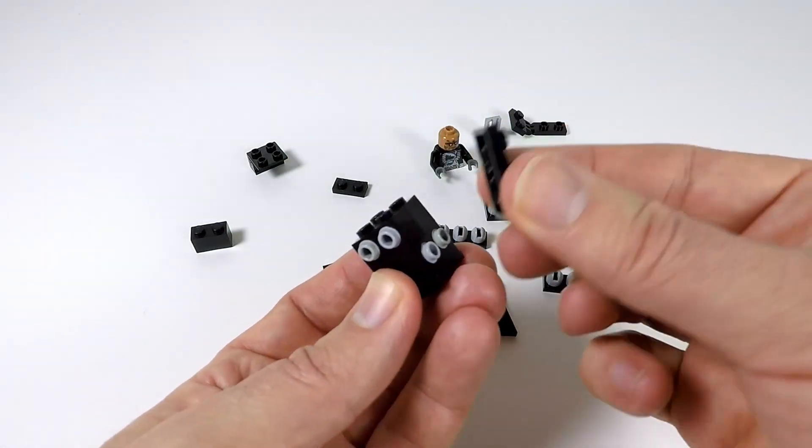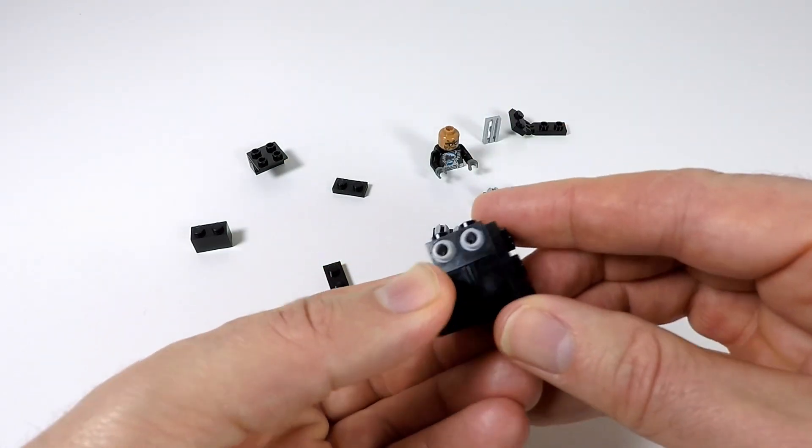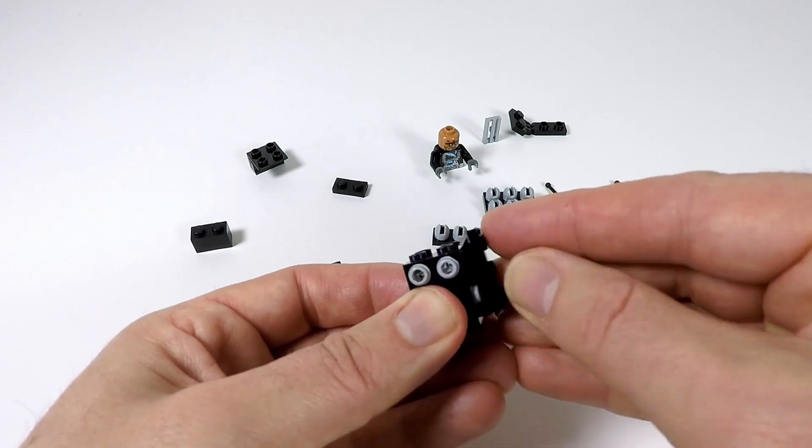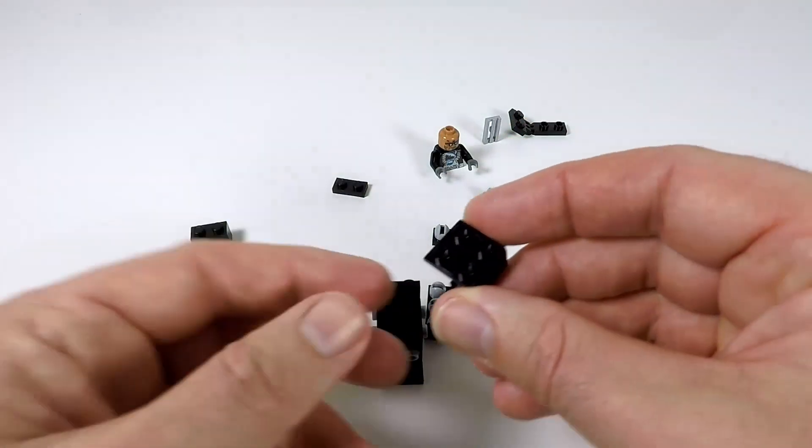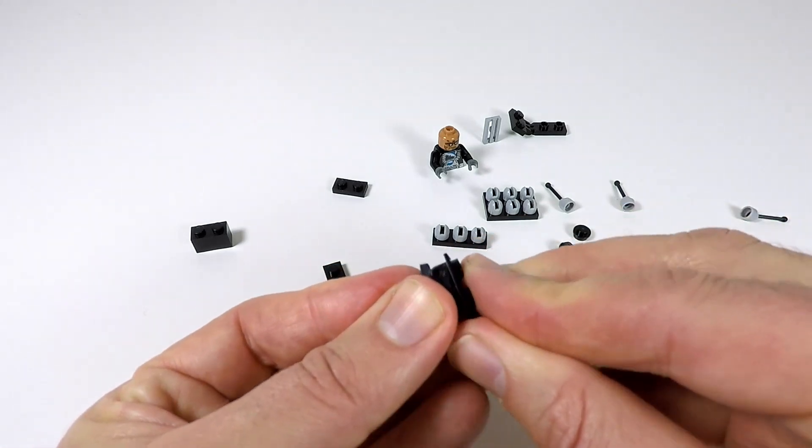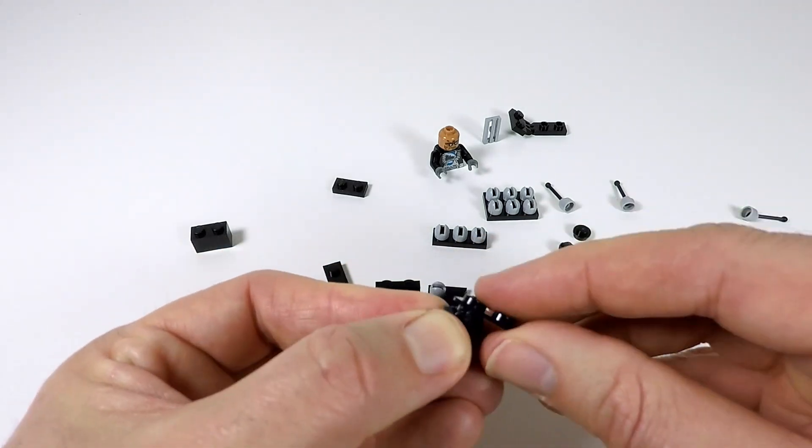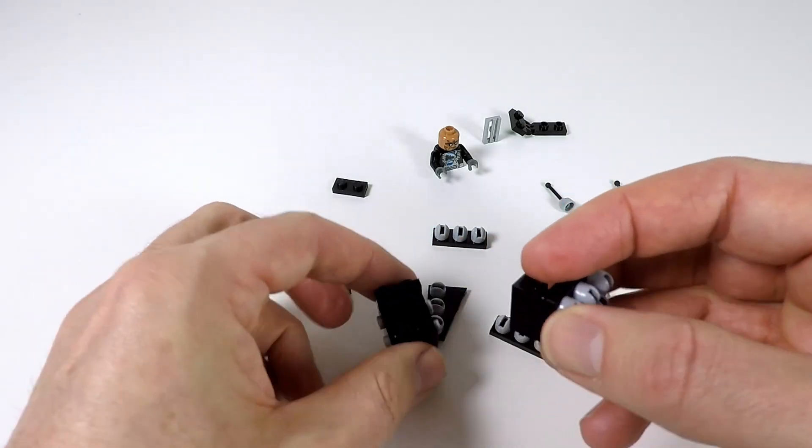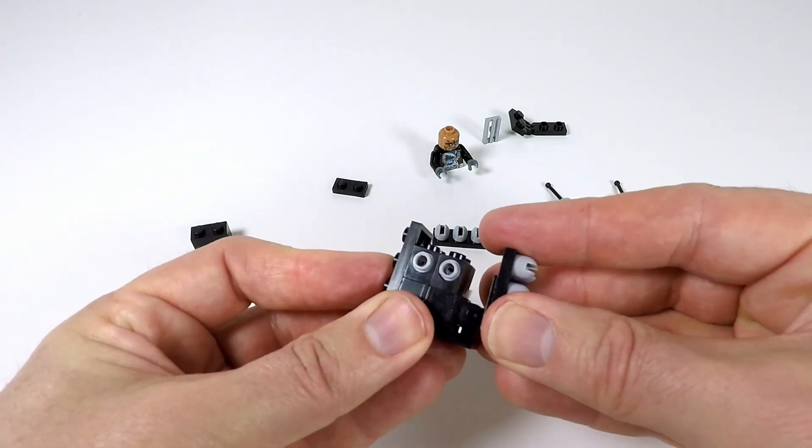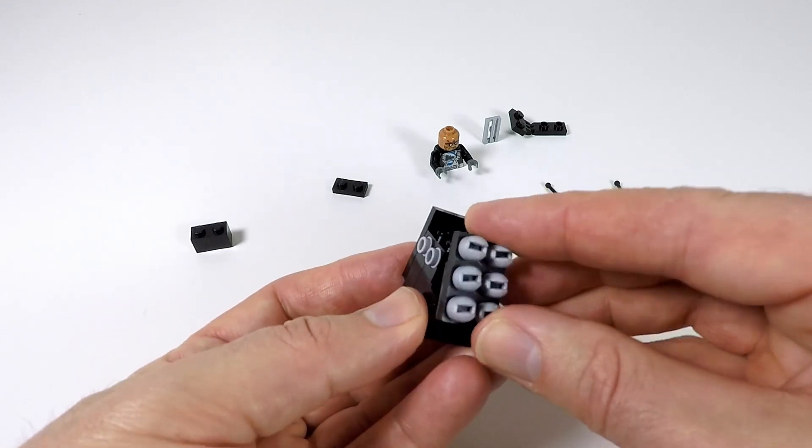Now, at the back we need a 2x3 plate, and that actually just sits a little bit higher than that. Okay, so now at the front, we need one of these hinged plates. It's got like a thin top on it, and we put another 2x3. So we'll pop that there, and pop that on like that. So that's the bit that slopes at the front here.